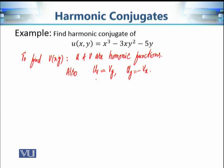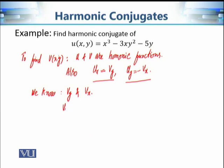What do we know about V? From the Cauchy-Riemann equation, if we take the partial derivative of V with respect to y, it must equal the partial derivative of U with respect to x. Similarly, Vx must equal -Uy. So we know both Vy and Vx. Starting from Vy = Ux, since U is given, we can find the partial derivative of U with respect to x, which equals 3x² - 3y².